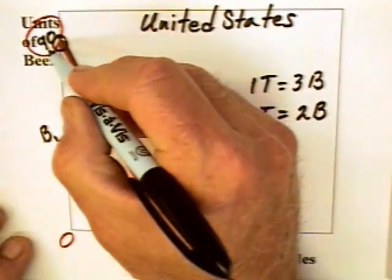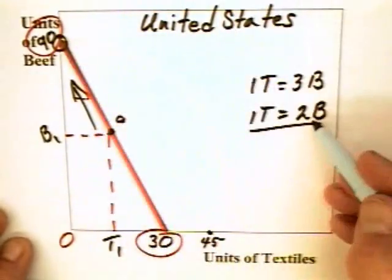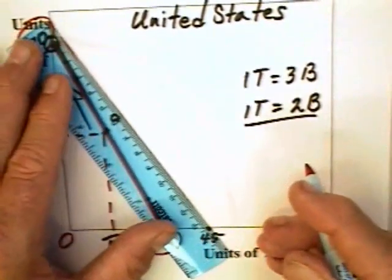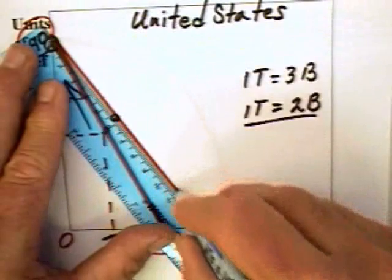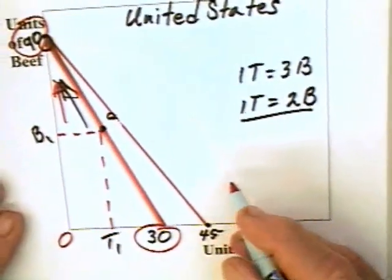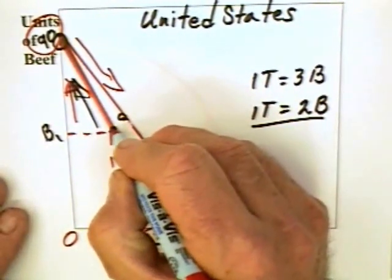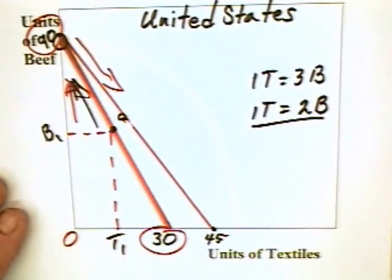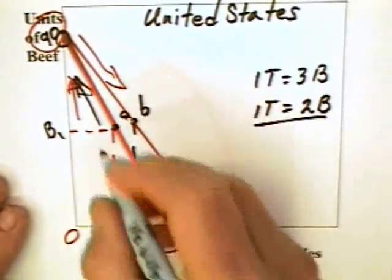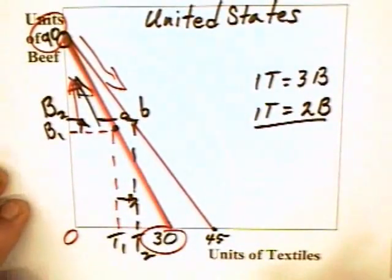The United States can then take its 90 units of beef and trade them for 45 units of textiles — since 90 divided by 2 equals 45 — at the one textile to two beef ratio. The production possibilities of the United States extend between these two points, meaning the United States can specialize in beef and then move down the trade curve with China, moving from combination A to a combination like B. As a result, the United States can have more textiles and more beef. The same demonstration could be made with China.